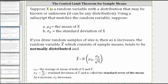Suppose x is a random variable with a distribution that may be known or unknown. Using a subscript that matches the random variable, suppose mu sub x equals the mean of x, and sigma sub x is equal to the standard deviation of x.